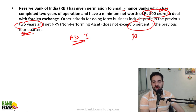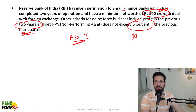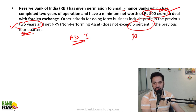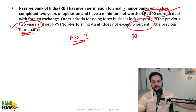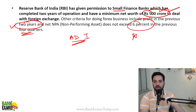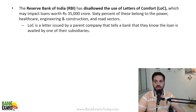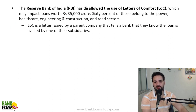For Small Finance Banks to become AD1, the minimum net worth requirement is 500 crore and they must have 2 years of operations. Additionally, RBI has disallowed the use of Letter of Comfort, which may impact loans worth 35,000 crore.